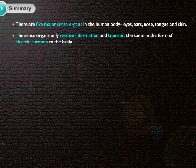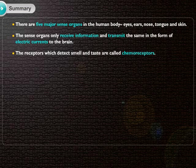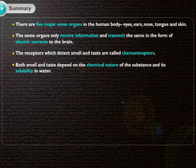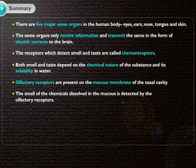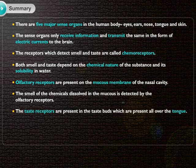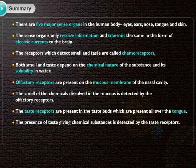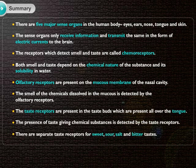The sense organs only receive information and transmit it in the form of electric currents to the brain. The receptors which detect smell and taste are called chemoreceptors. Both smell and taste depend on the chemical nature of the substance and its solubility in water. Olfactory receptors are present on the mucous membrane of the nasal cavity, where the smell of chemicals dissolved in the mucus is detected. The taste receptors are present in the taste buds distributed all over the tongue, where the presence of taste-giving chemical substances is detected. There are separate taste receptors for sweet, sour, salt, and bitter tastes.